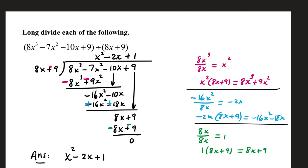8x plus 9 will go outside the division bracket. Your dividend goes underneath. To get the process started, you go through several cycles of the same steps. You take your first term from underneath, divide it by the first term of your divisor. 8x cubed divided by 8x is x squared. That result goes up top.